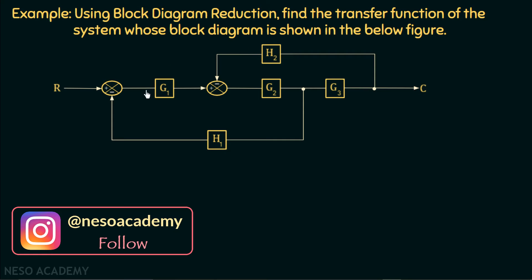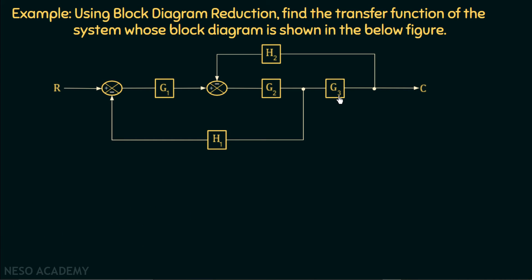If we observe this block diagram representation, we are given two adders. There are three blocks having gains G1, G2, and G3. There is a negative feedback having gain H1 connected to one adder, and one more negative feedback having gain H2 connected to the other adder. The reference input is R and the final output is C, and we need to find out the overall transfer function.